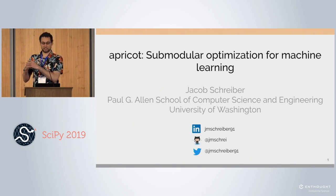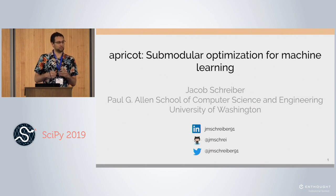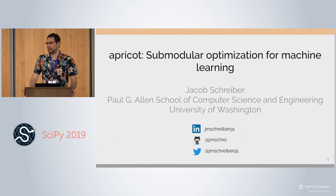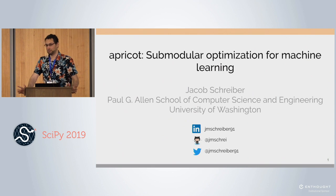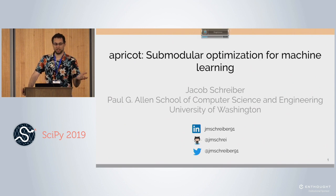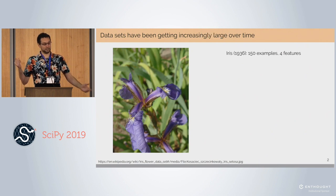Apricot implements submodular optimization. I'm sure that most of you don't know what that is, and if you're scared of math like me, it's going to be okay. This is going to be mostly a high-level overview of the types of things you can do with submodular optimization and why you might want to do that. The backend is mostly abstracted, and we have a lot of documentation and examples on the GitHub.